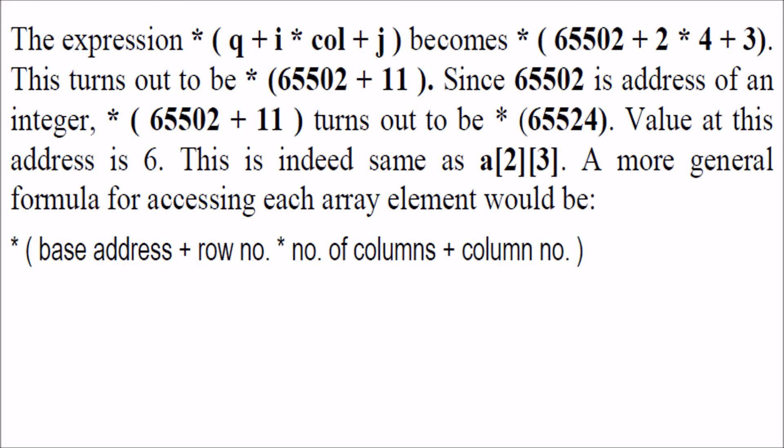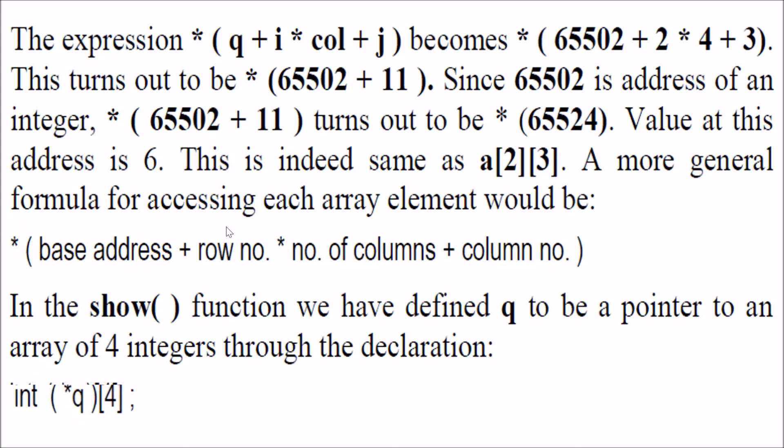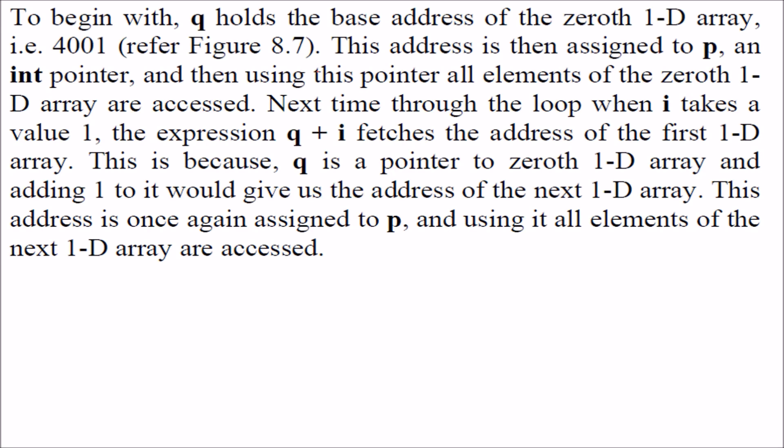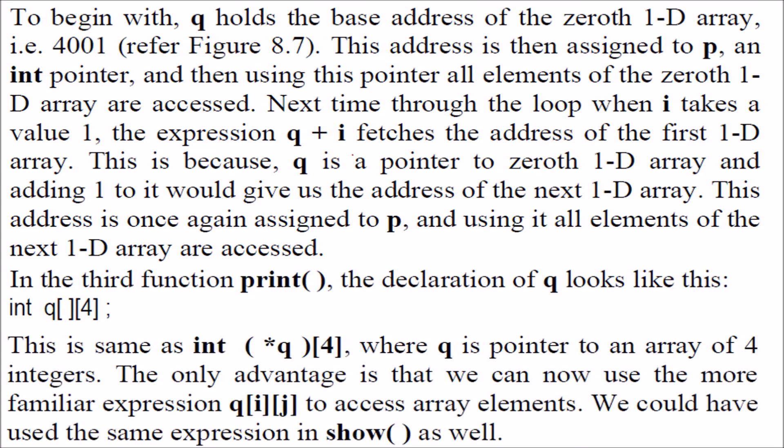These are the expressions. For pointer to array, we will use base address plus row number into number of columns plus column number, and the value of this will show all the values. This is how you have to write it. This is very important. This show function we have defined for four integers. This is why we have given four here. I have already explained the second one, and the third one is simply q[i][j] you can take.